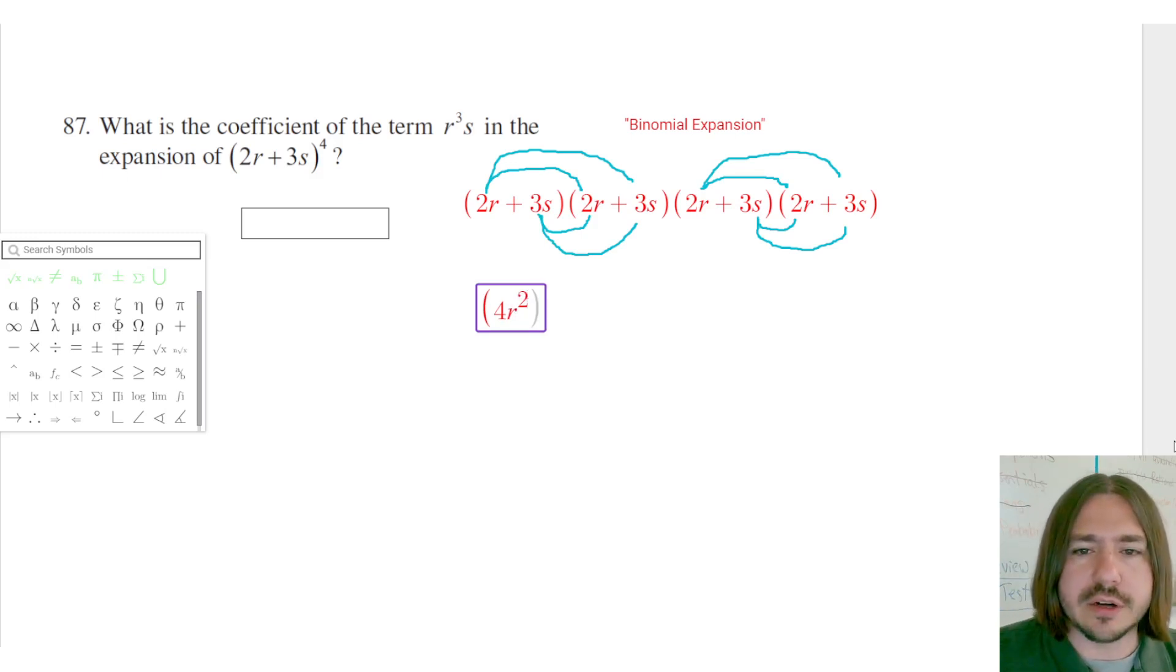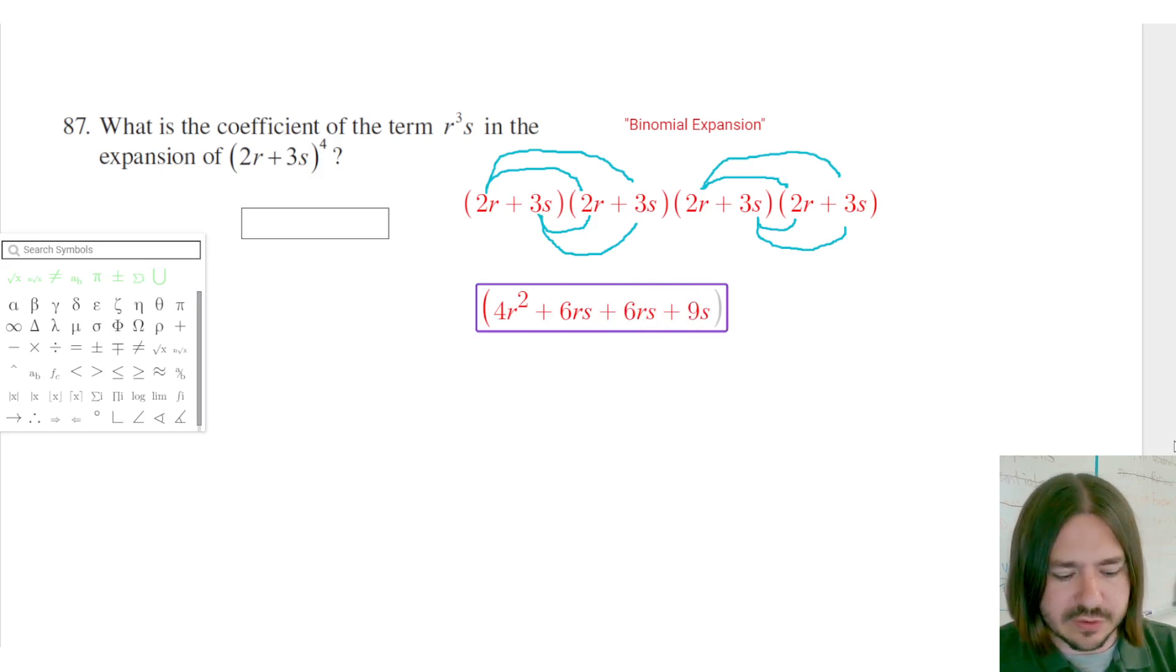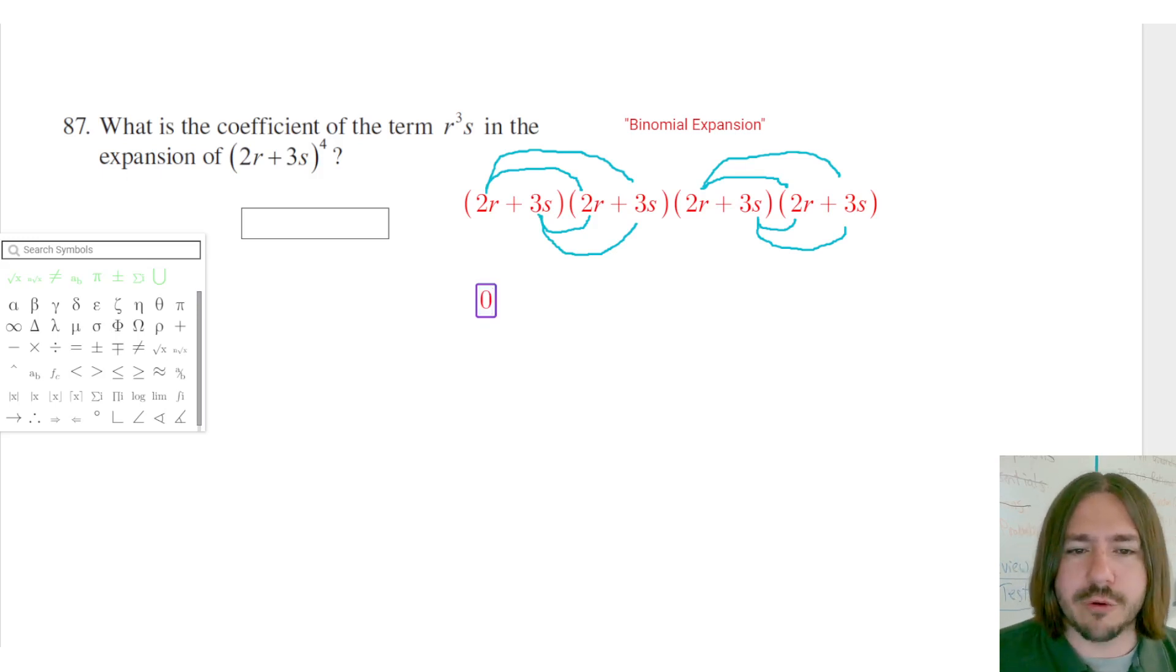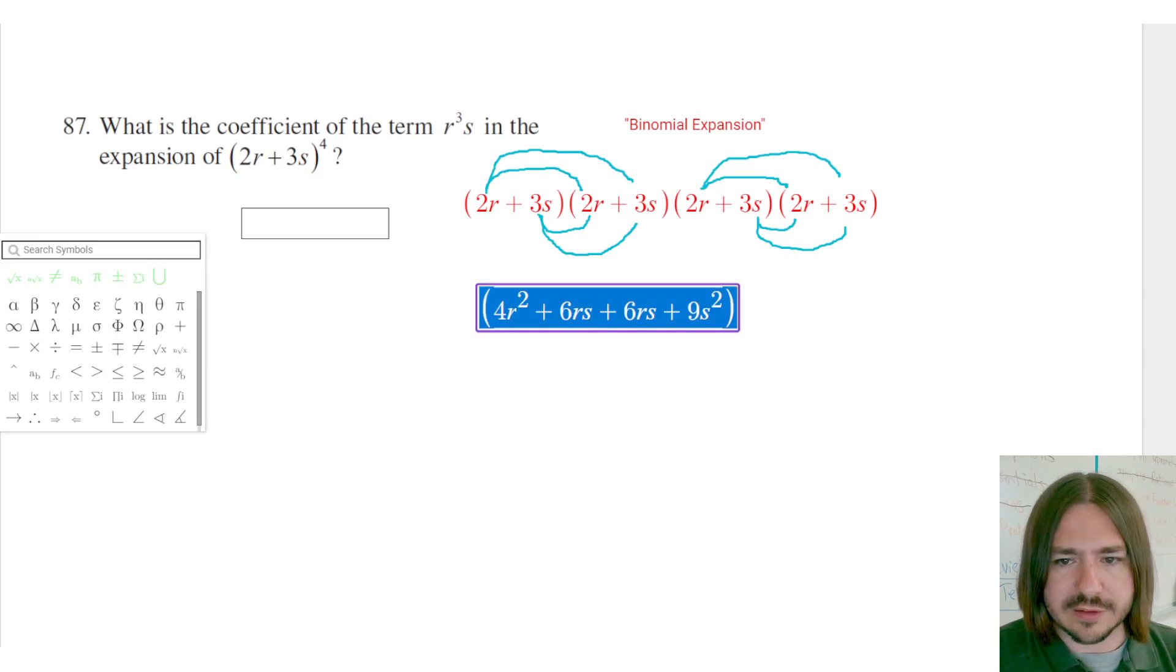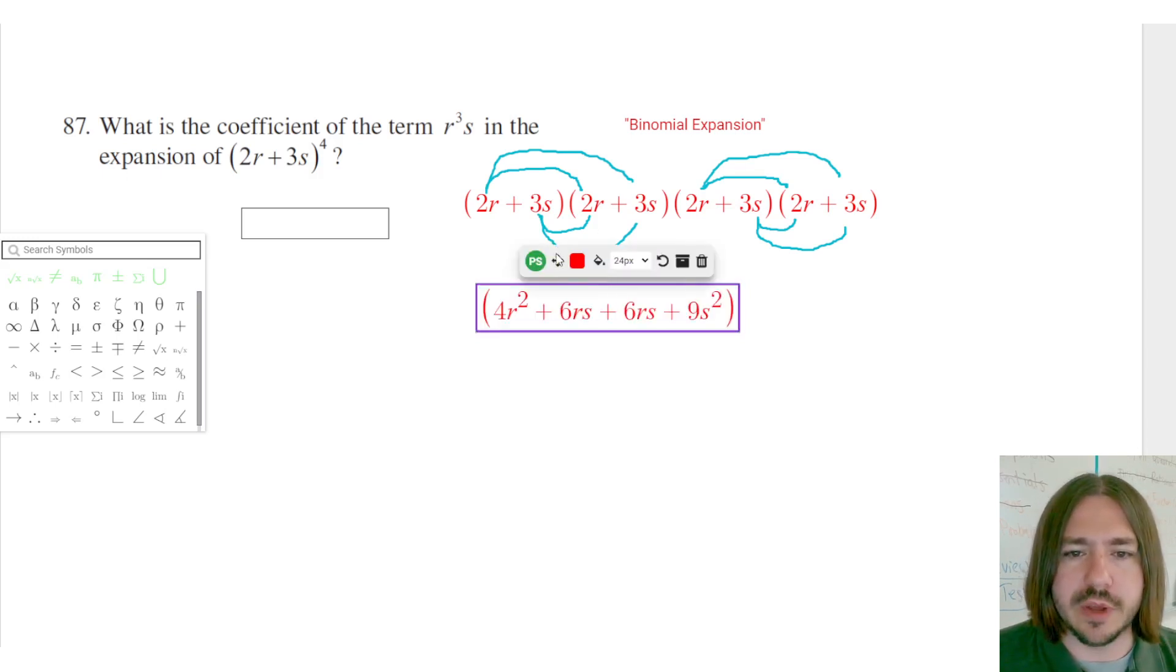And then 2r times 3s is going to be 6rs. And then 3s times 2r, we're going to get another 6rs. And then plus 9s squared. And I'll get the same thing for the second multiplication as well.